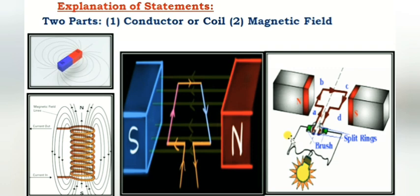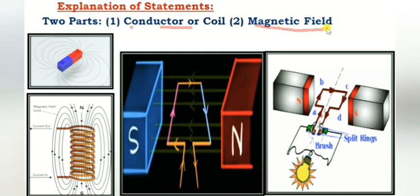So here we have two parts. First, a conductor or a coil, and second, a magnetic field. We produce the magnetic field in two ways: by using permanent magnets or electromagnets.